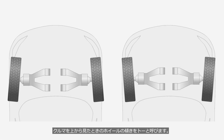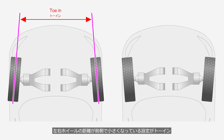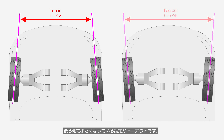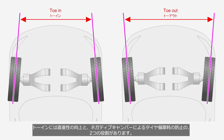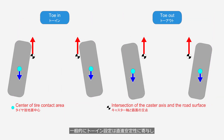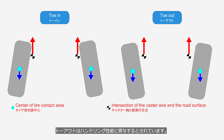The tilt of the wheels when viewed from above the car is called toe. The configuration where the distance between the front edges of the left and right wheels is smaller is called toe-in, while a larger distance is called toe-out. Most passenger cars today are set to either toe-in or zero-toe. Toe-in serves two purposes: improving straight-line stability, and preventing uneven tire wear caused by negative camber. Generally, a toe-in setting contributes to straight-line stability, while toe-out is thought to enhance handling performance.